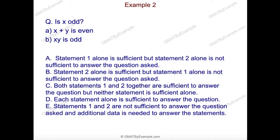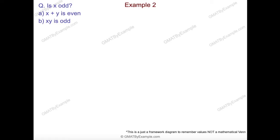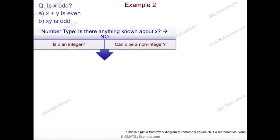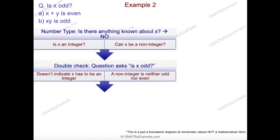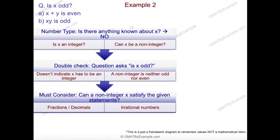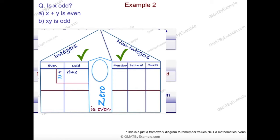Let's apply our secret framework. The question says: is x odd? What kind of number type is x? Nothing is given — let's double check. The question asks 'is x odd?' but doesn't tell us anything about x. It doesn't indicate whether x is an integer or a non-integer. A non-integer value is neither even nor odd, and we have to consider that because the question does not specify whether x is an integer. The bottom line is we must consider all values, and this is why the Number House Framework helps us get these kinds of questions correct.